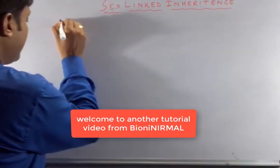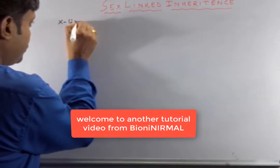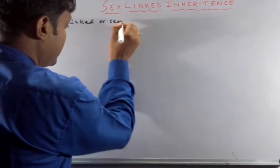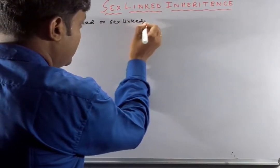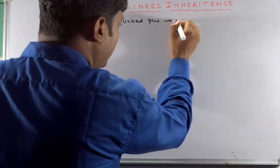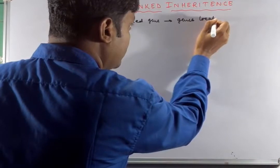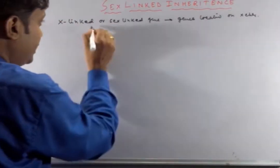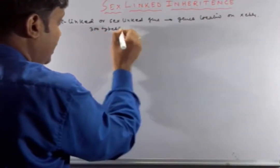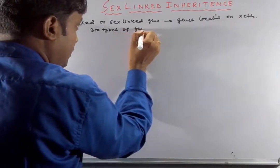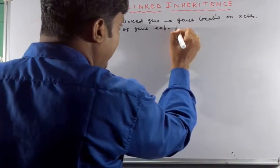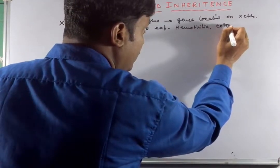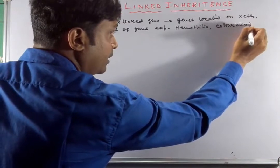Sex-linked genes are those genes located on the X chromosome. About 300 different types of genes are actually located in the X chromosome. Examples include hemophilia and color blindness. Today I shall discuss the color blindness inheritance pattern.